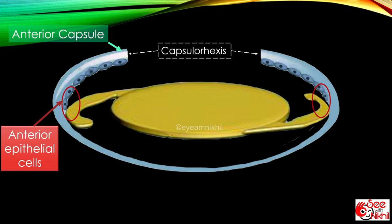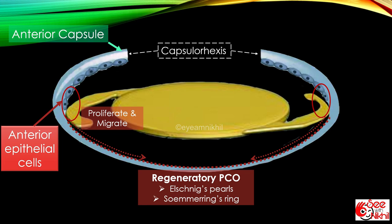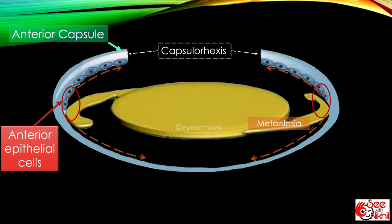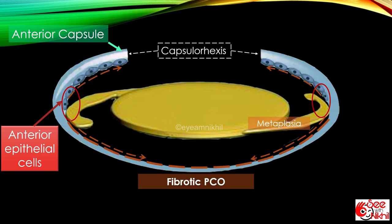These residual subcapsular epithelial cells proliferate and migrate along the posterior capsule to form regeneratory type of PCO, which might be in form of Elschnig's pearls or Soemmering's ring. Or they may undergo metaplasia and transformation into myofibroblast, leading to fibrotic type of PCO.